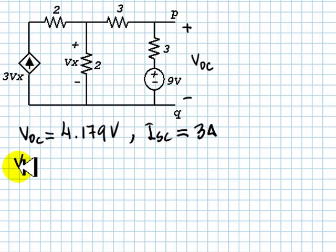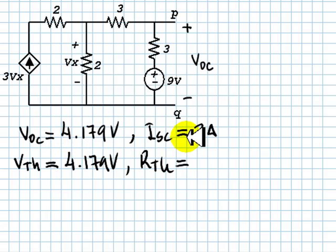From our lectures, we know that the Thevenin voltage is directly VOC, 4.179 volts. And our RThevenin is VOC divided by the short circuit current. 4.179 divided by 3.